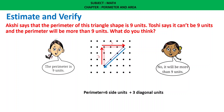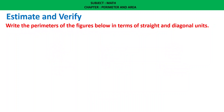Why 6 side units? Counting: 1, 2, 3, 4, 5, 6 straight units. Then the diagonal units: 1, 2, 3 diagonal units. So the perimeter will be 6 side units plus 3 diagonal units. Estimate verified.